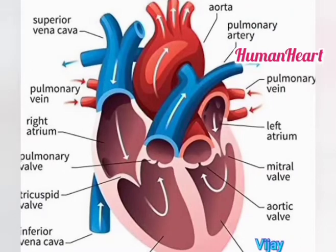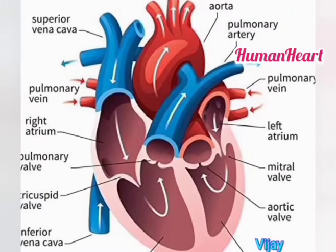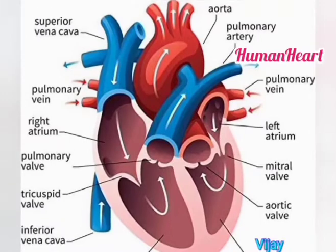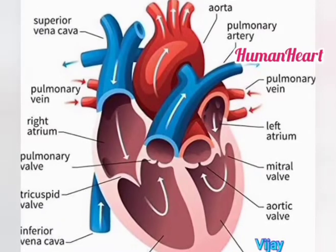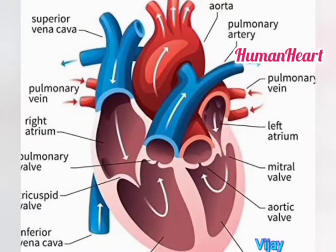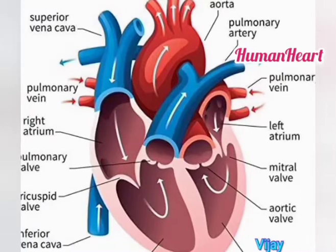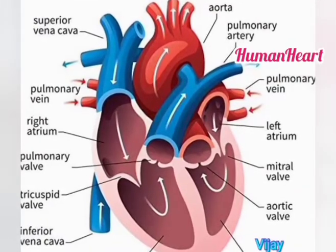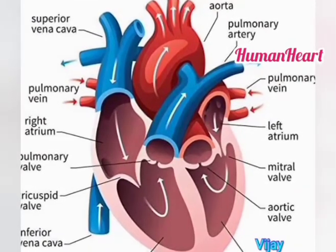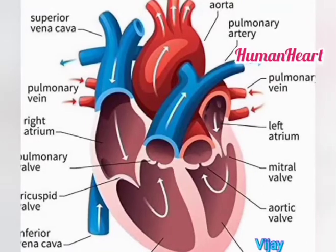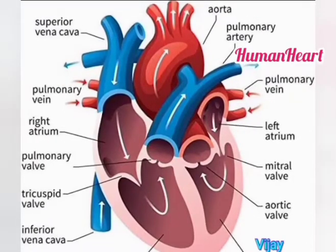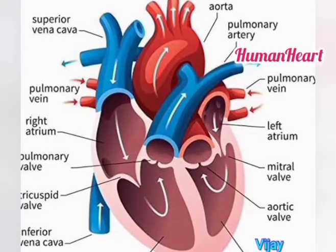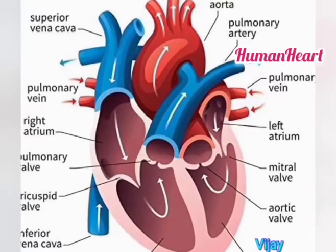The two upper chambers are the right auricle and left auricle. They are separated by a septum, or wall, called the auricular septum. The two lower chambers are the right ventricle and left ventricle, also separated by a septum called the ventricular septum.